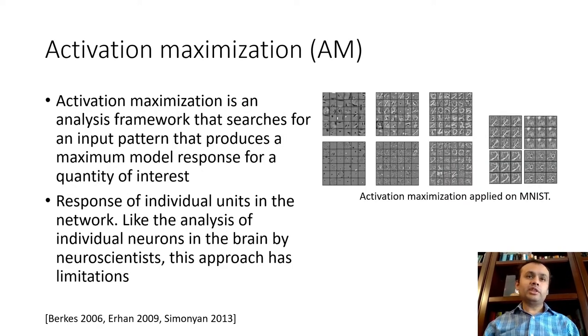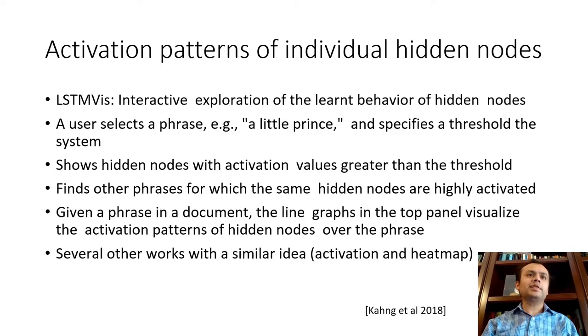Activation maximization is an analysis framework that searches for input patterns that produce a maximum model response for whatever quantity of interest. So it may be image, it may be text, depending on the model, and it's analogous to analysis of individual neurons in the brain by neuroscientists. And for the same reason, it has its limitations.